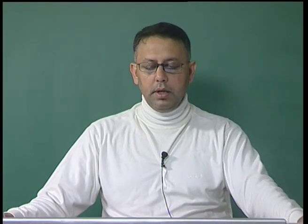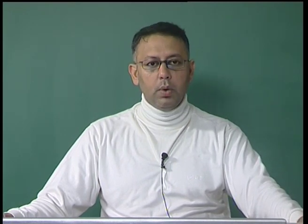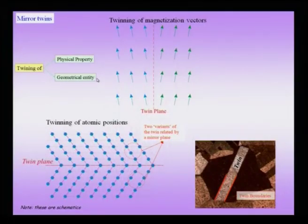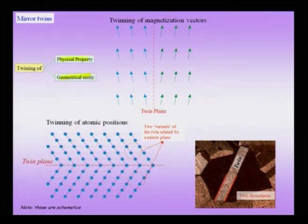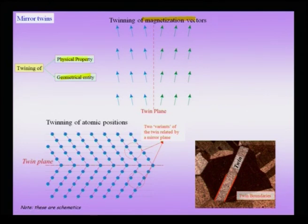Next, we consider the defect which is the twin and the associated interface defect which is the twin boundary. Like before, we can think of a twin either based on a geometrical entity, which is the usual kind of definition, or we can think of a twin in terms of a physical property. There are examples on this slide which show both these kinds of twins. The one on the top is twinning with respect to the magnetization vectors. These are schematics and in real systems the actual orientation of these spin vectors could be slightly different, depending on the specific system or property under consideration.